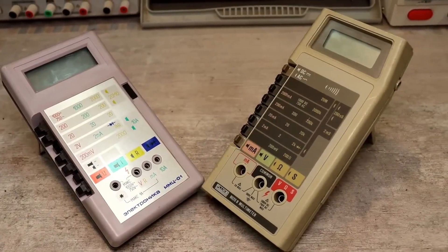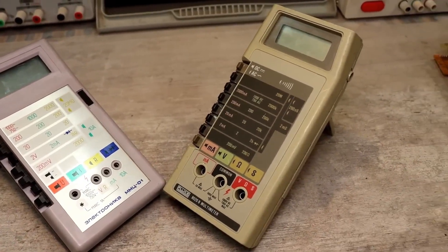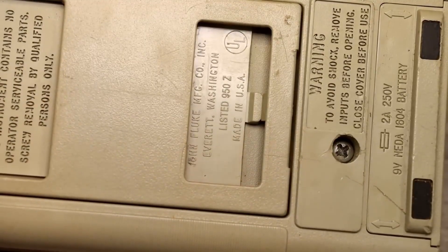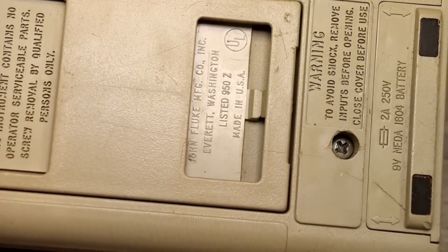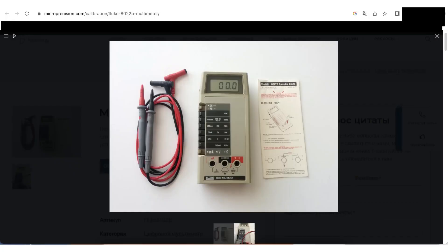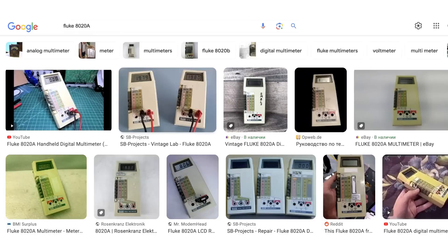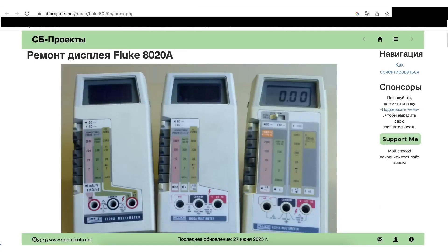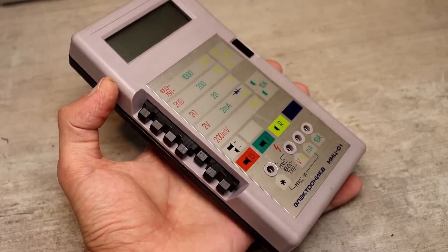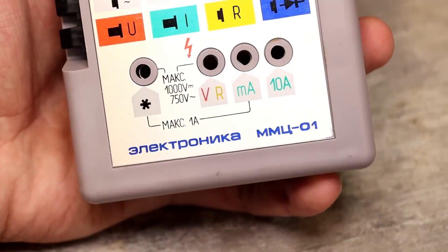To be fair, the 8020b was quite an advanced device by those standards, but there were others in this line. For example, the 8022, which did not have the continuity and conductance measurement functions, or simplified models with the index, so there were models functionally similar to our Electronica. Therefore, we will not take the previously mentioned two functions into account.